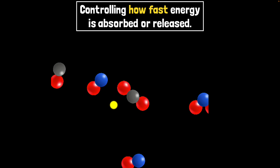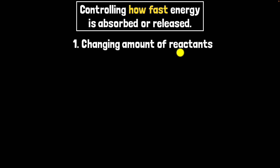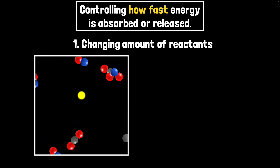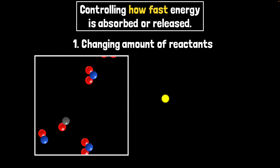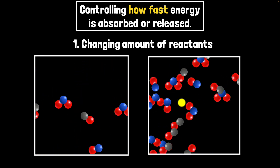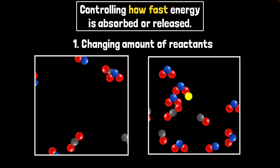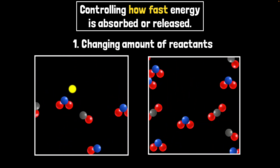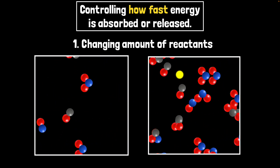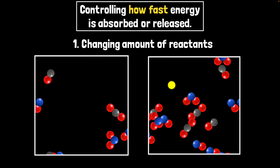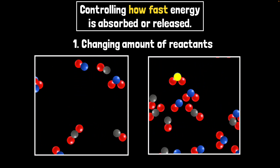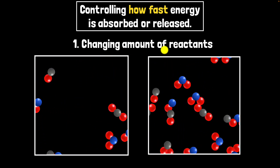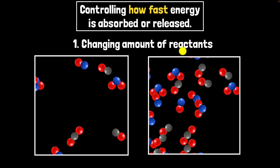The first way to control collision rate is by changing the amount of reactants. With fewer reactants, fewer collisions happen per second. With more reactants, many more collisions happen — boom, boom, boom — per second. So increasing the amount of reactants not only gives more total energy but also delivers that energy much more quickly.